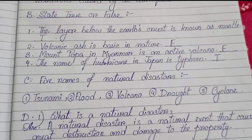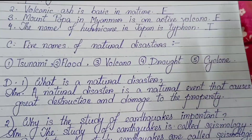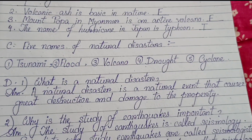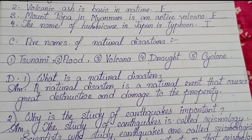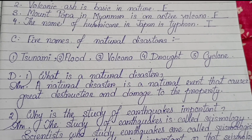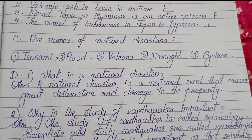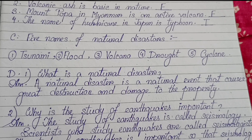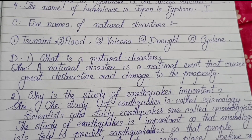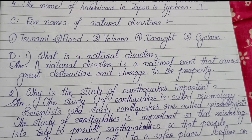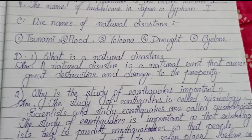Number C: Five names of natural disasters — tsunami, flood, volcano, drought, cyclone. Next, Number D: there are some question answers, let's solve.